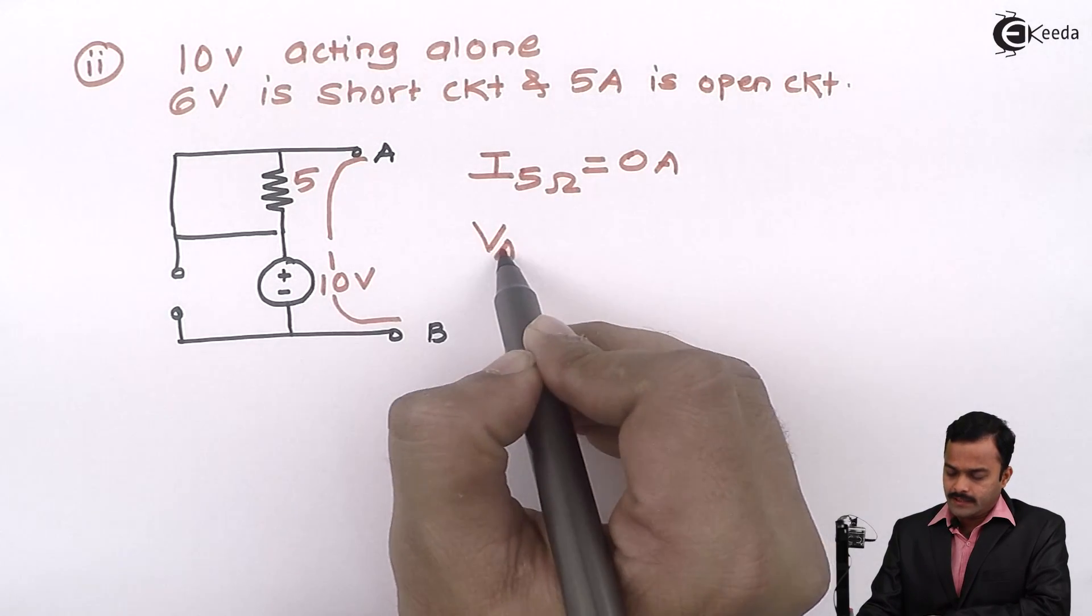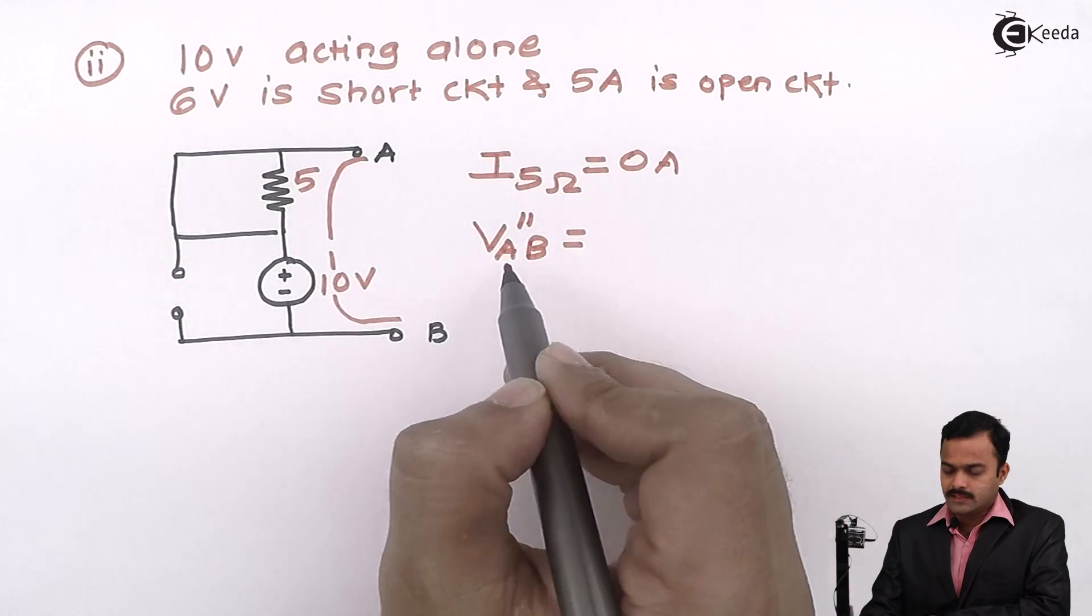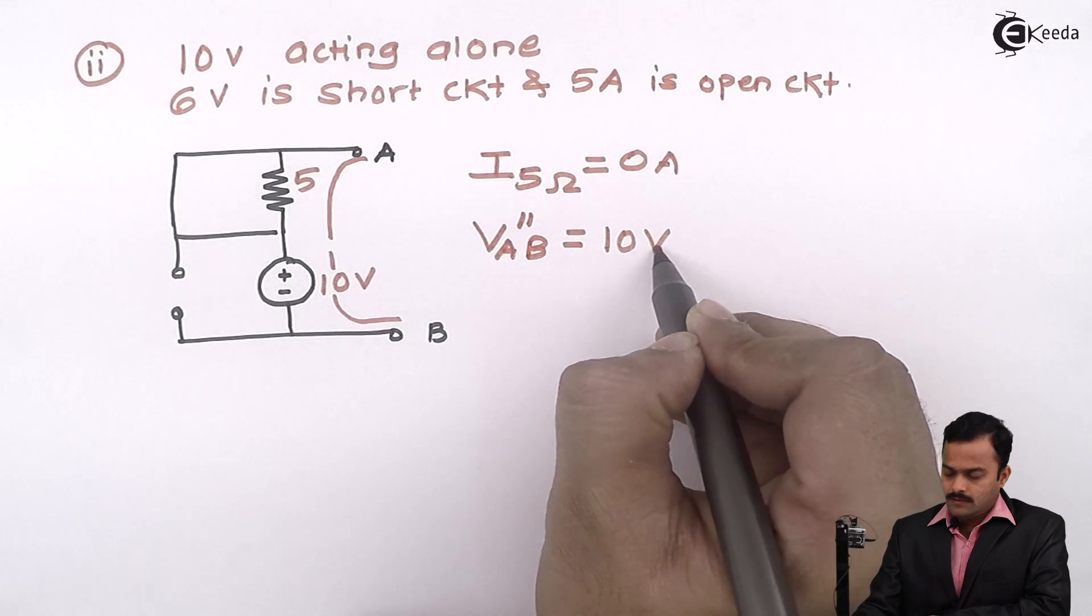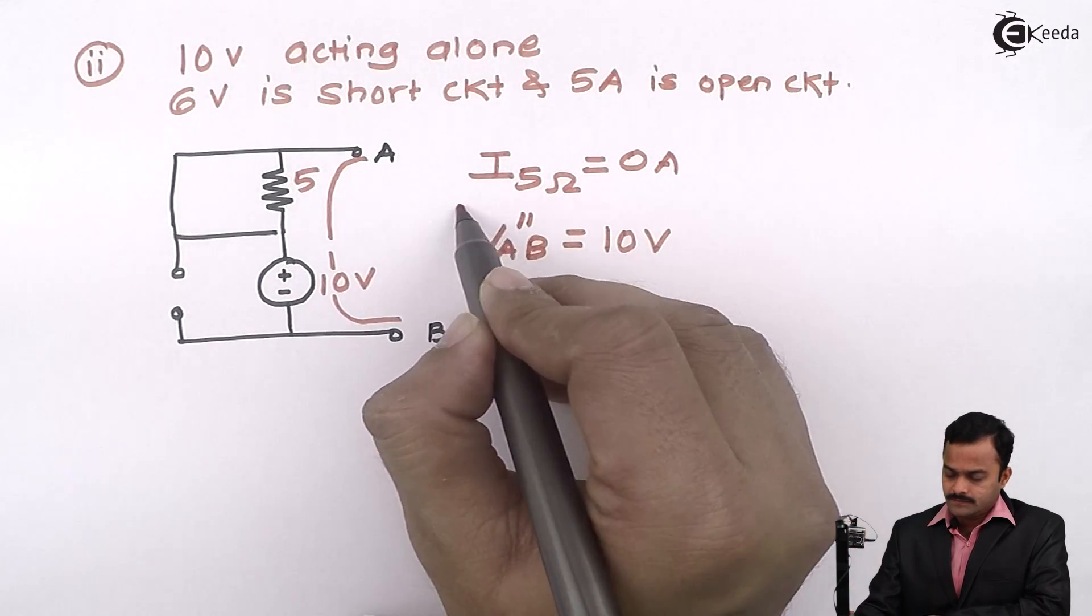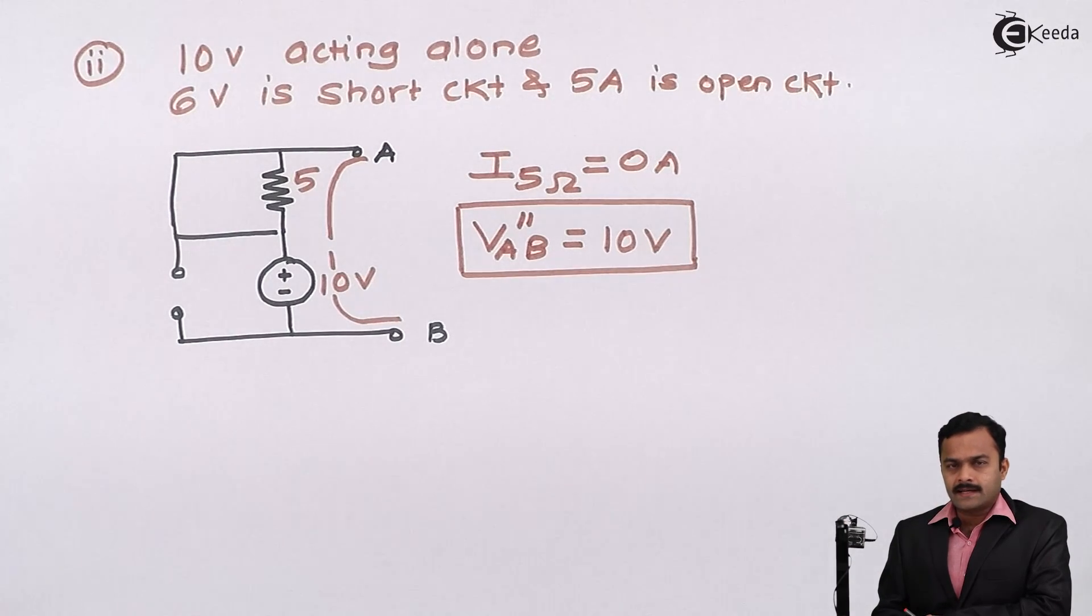So obviously, whatever voltage source is present, that will be the voltage across points A and B. So here also, I can directly say VAB double dash because it is only because of 10V acting alone. Second answer I am getting.